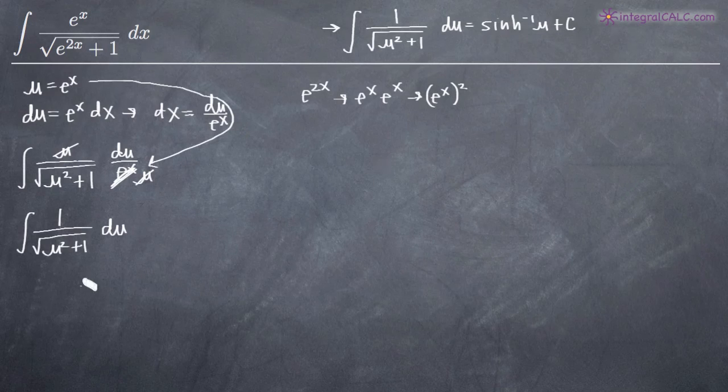So we can integrate and what we'll get is the inverse hyperbolic sine function of u, and then we always add c to account for that constant of integration.